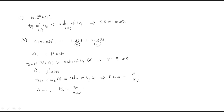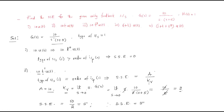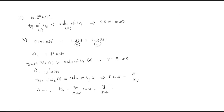Kv = limit s→0 of s·G(s) = limit s→0 of s · [10 / s(s+5)]. The s terms cancel, and substituting s=0 gives Kv = 10/5 = 2. Therefore, steady-state error for part B = a / Kv = 1 / 2.